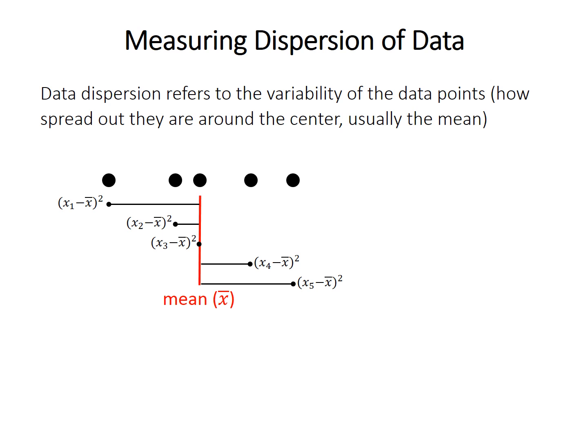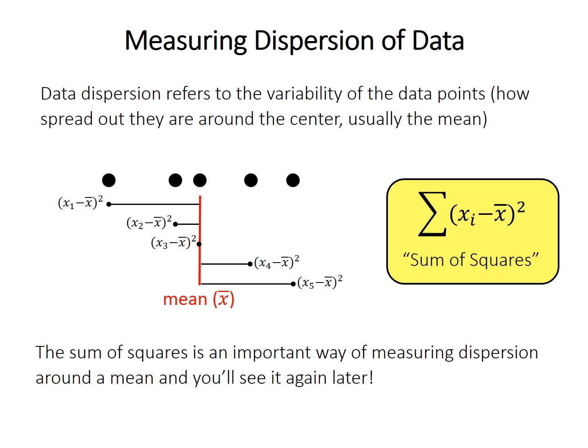These are then summed up, or all added together, to give a measure called the sum of squares. Just the sum of the squared distances from each point to the mean. This is an extremely widespread and important way of measuring dispersion, around the mean at least. And it'll come back again, we'll see it later on.